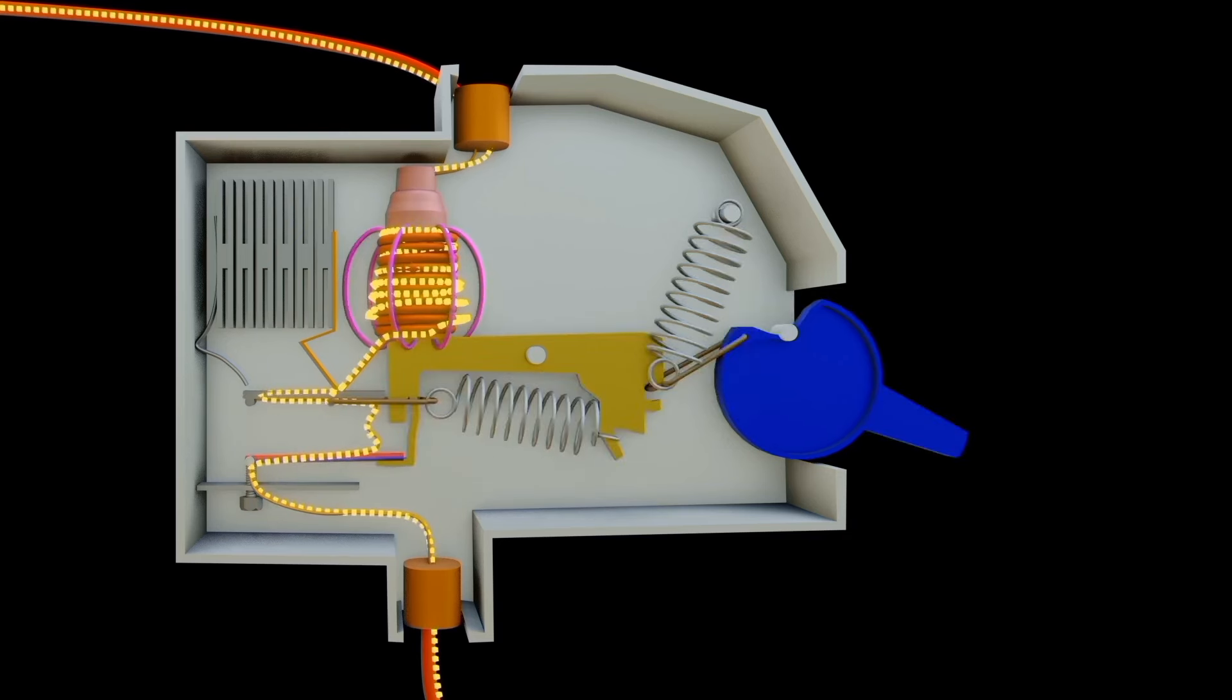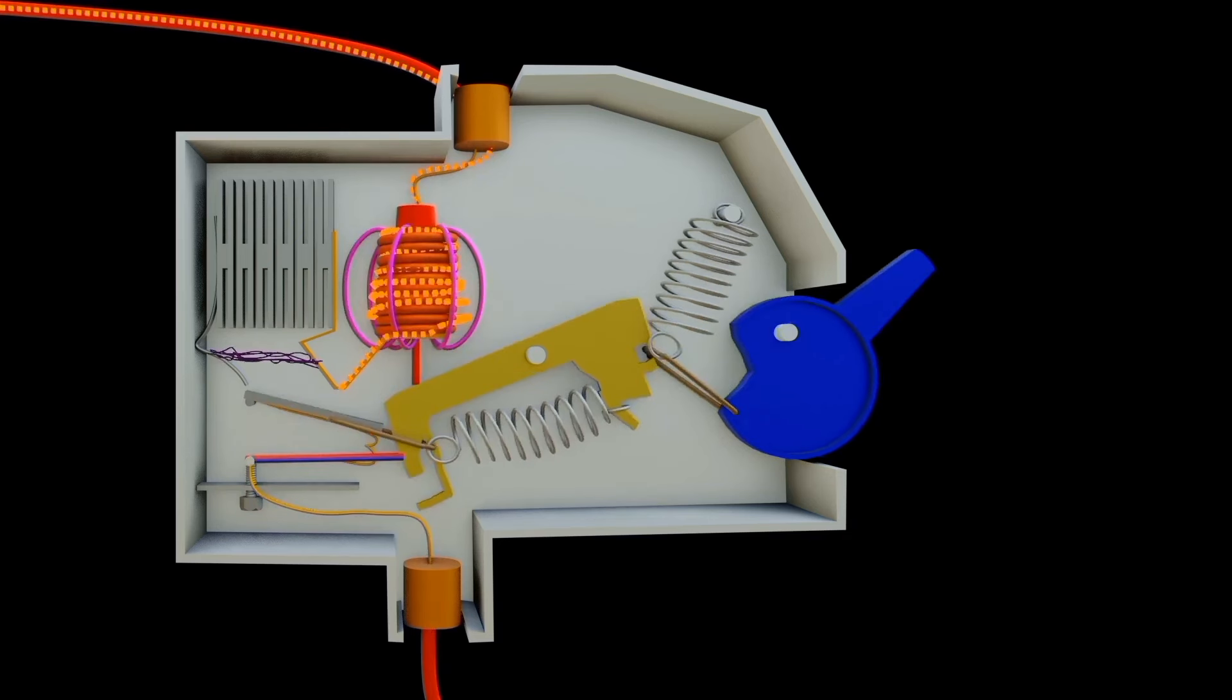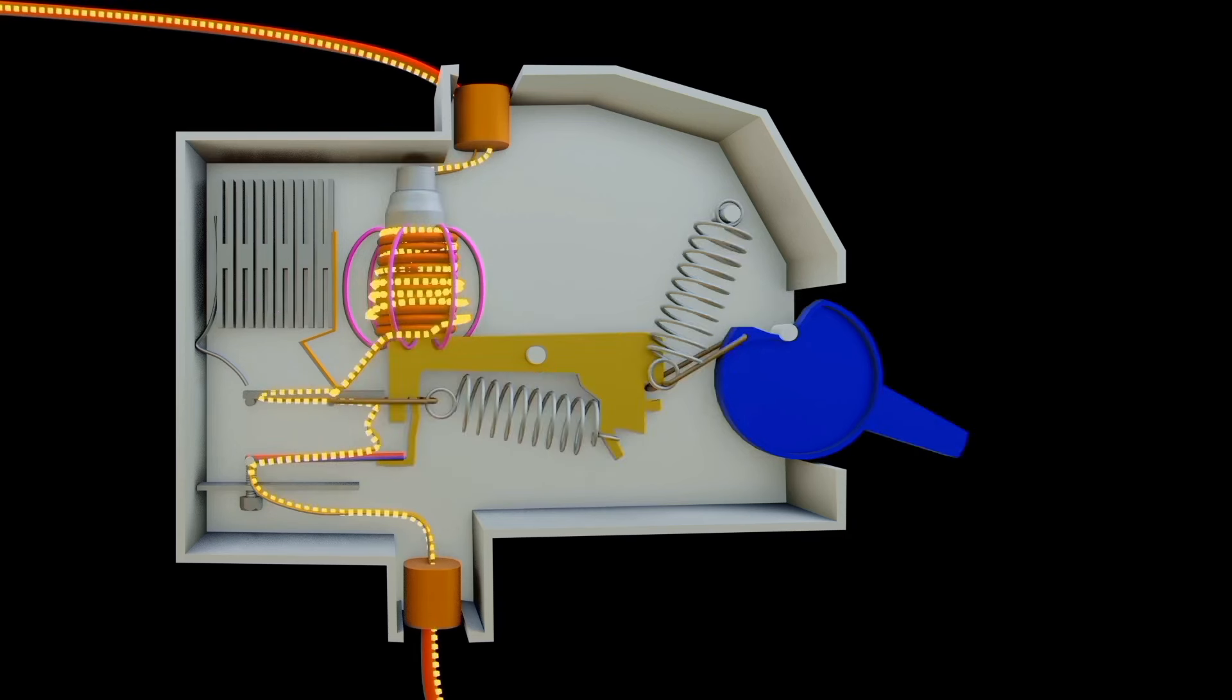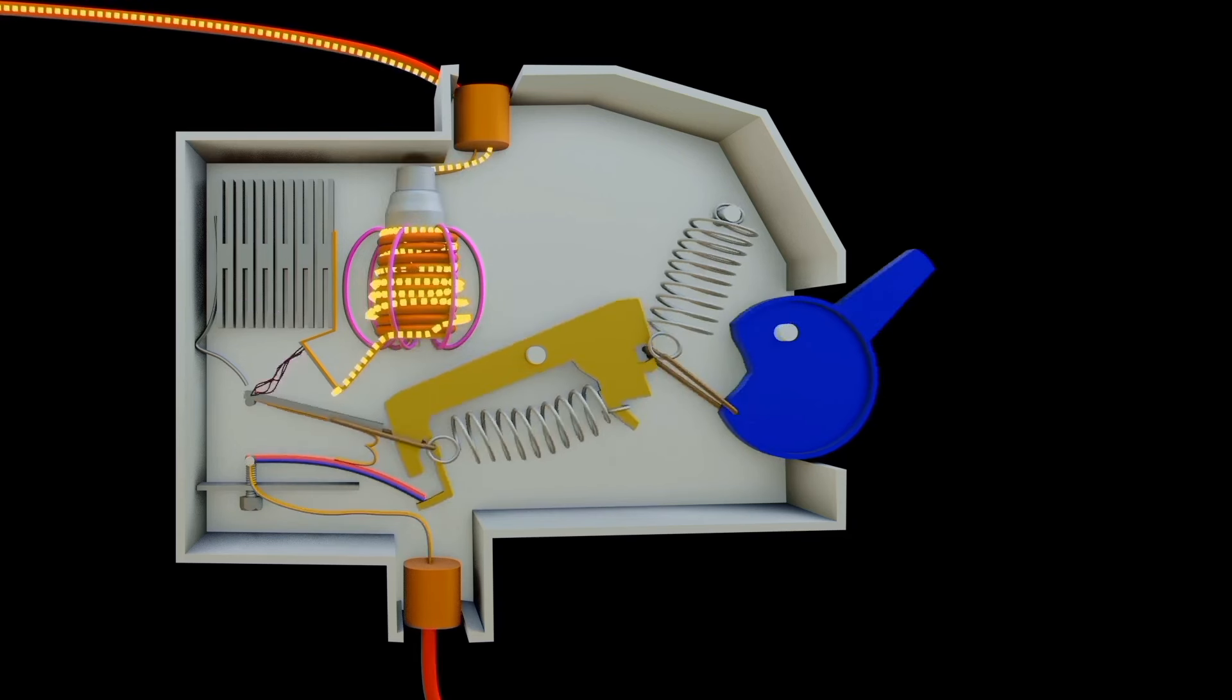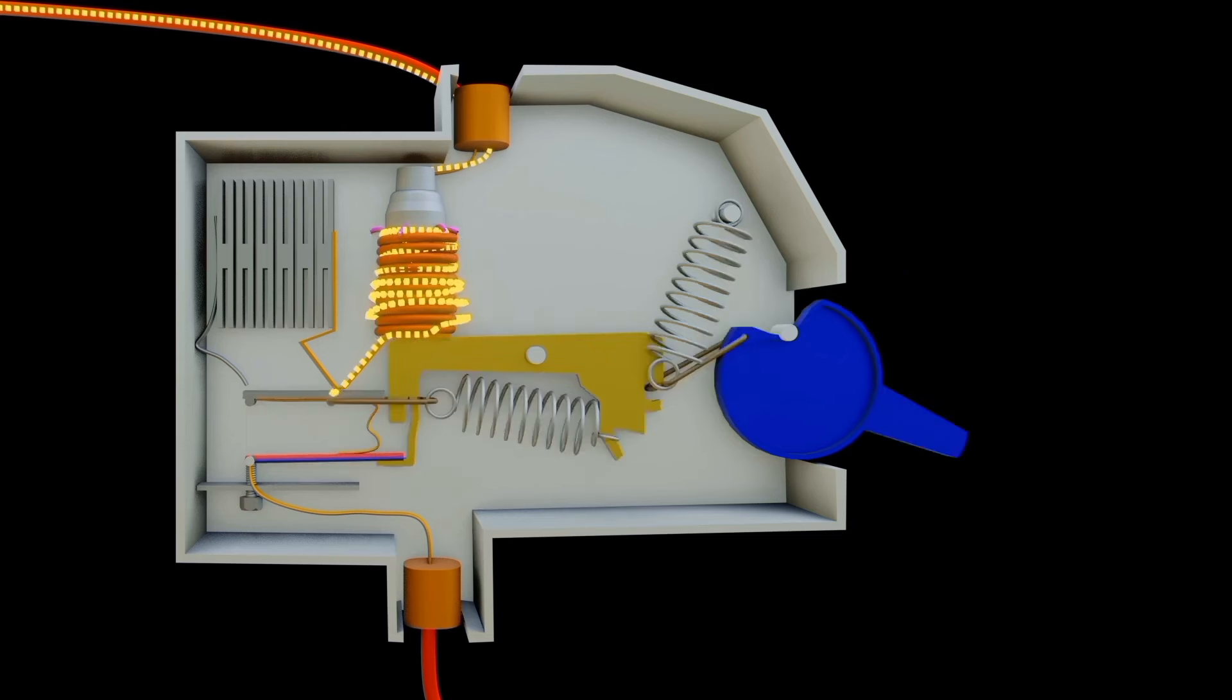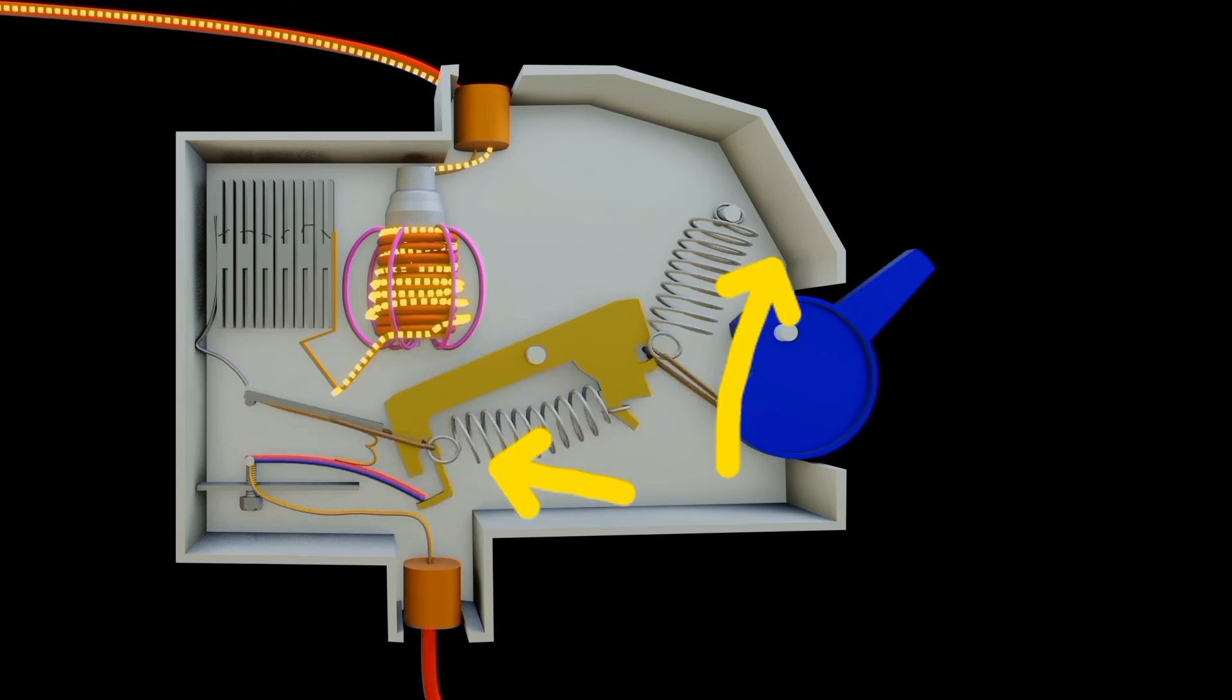Circuit breaker works by using a spring-loaded mechanism to open and close the contact. Here we have two spring mechanisms. When one spring stretches it translates the force to the other spring which squeezes. One spring is attached to the handle of the circuit breaker. This movement of these springs with one spring attached to the handle leads to opening and closing the contact.